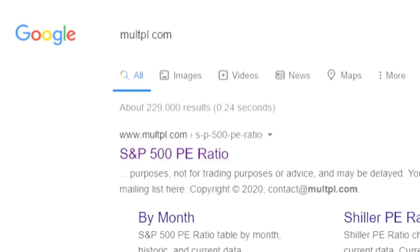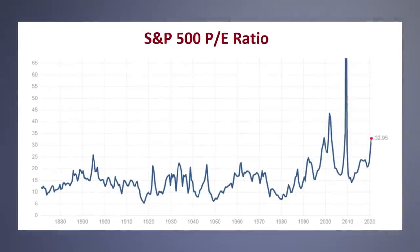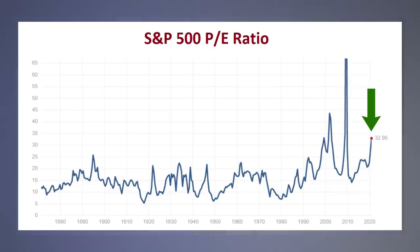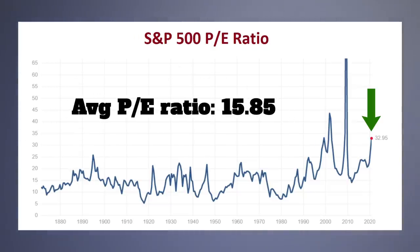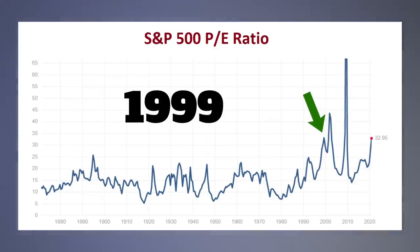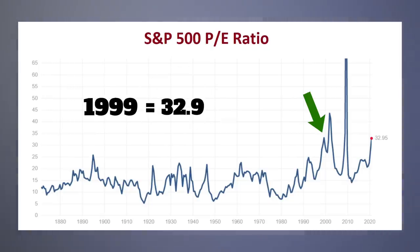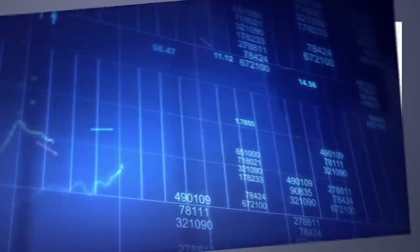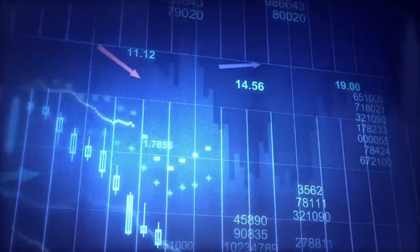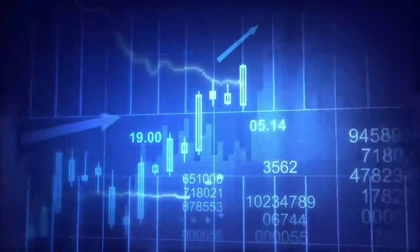We do a Google search and go to the website multpl.com, which shows us the S&P 500 PE ratio graph. The current S&P 500 PE ratio is 32.95. Looking through history, that's quite a bit higher than its normal figure — the average PE ratio throughout history is 15.85, and right now it's double that. The PE ratio is similar to what it was in 1999, just before the dot-com crash. This potentially means the current market may be overvalued, but we need to look at the other indicators to confirm this hypothesis.